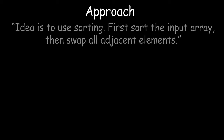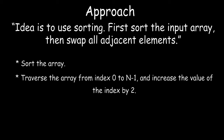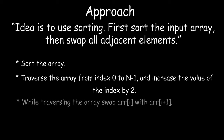We have two options to develop this algorithm. In the first method, the idea is to use sorting first — we sort the input array and then swap all adjacent elements. The approach is to sort the array, then traverse from index 0 to n minus 1, incrementing by 2, swapping arr[i] with arr[i+1], and finally print the array.